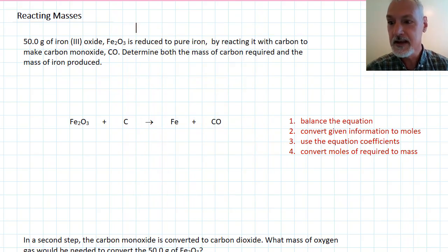The reaction I want to look at today is combining iron oxide, this material here, Fe2O3, with carbon to produce iron and carbon monoxide. The steps we go through I've highlighted over here in red. I need to begin with balancing my chemical equation.